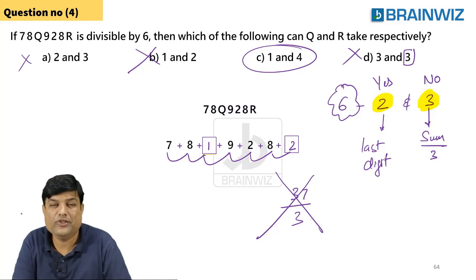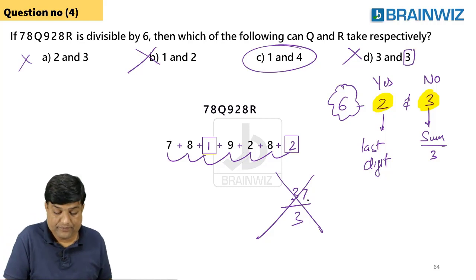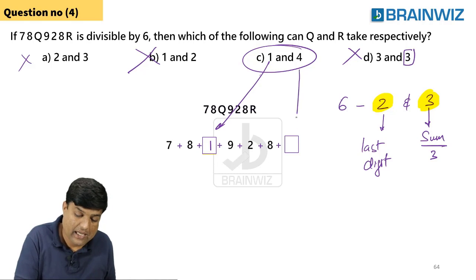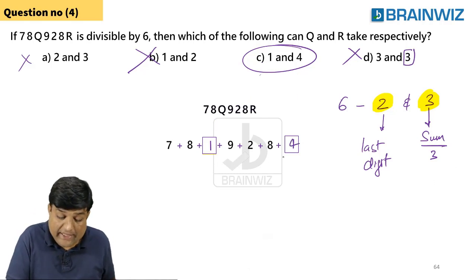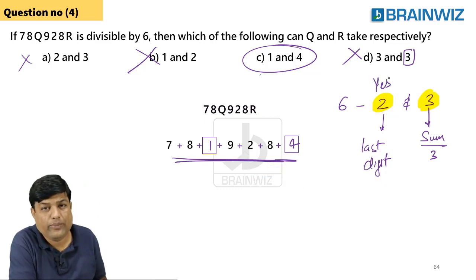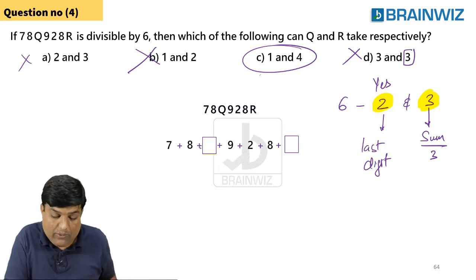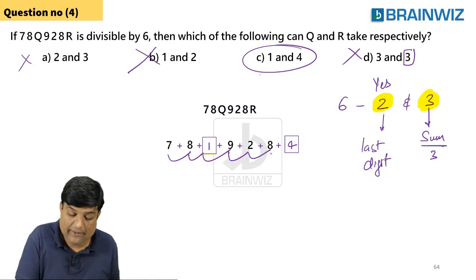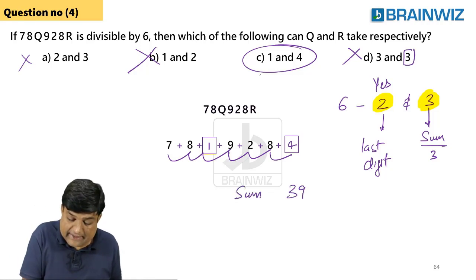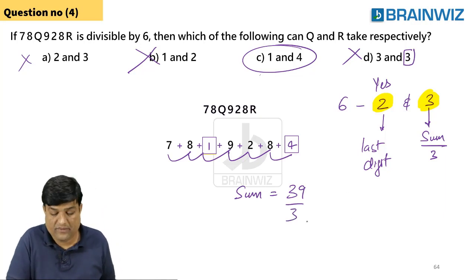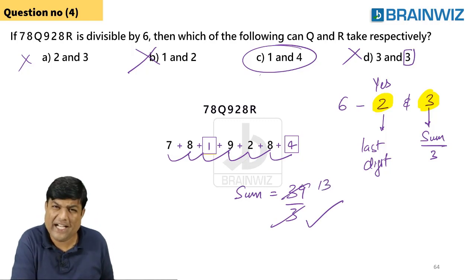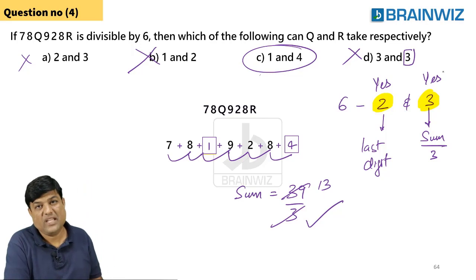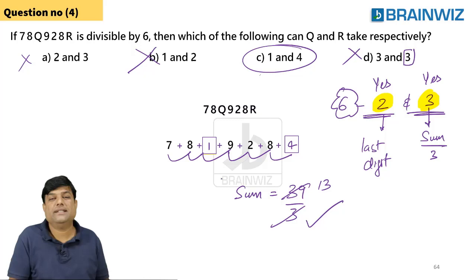Try option 3: Q=1, R=4. Last digit is 4, so divisibility by 2 is satisfied. Now check divisibility by 3: sum = 7+8+1+9+2+8+4 = 39. Is 39 divisible by 3? Yes — 3×13=39. So the number is divisible by both 2 and 3, meaning it is 100% divisible by 6. The answer is Q=1 and R=4.